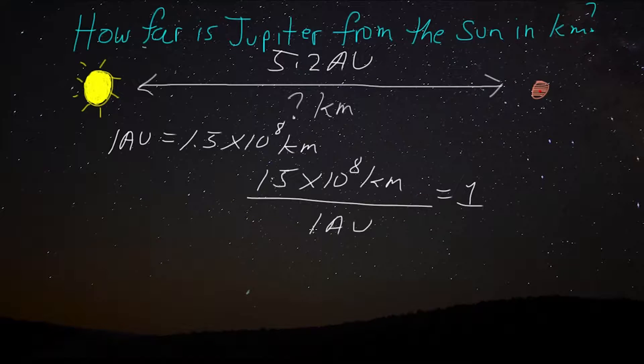I know it doesn't seem that way, but remember, 1 AU equals this value. So, if I divided 1.5 times 10 to the 8th kilometers by 1.5 times 10 to the 8th kilometers, I get 1. And that's pretty useful because we can take any number and multiply it by 1 and we won't change its value.